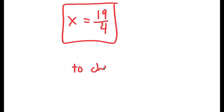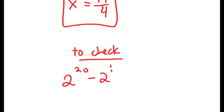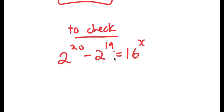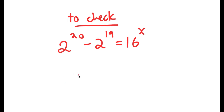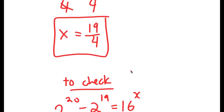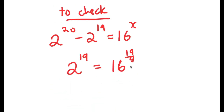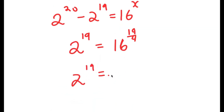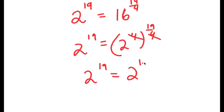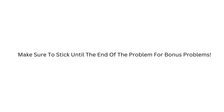To check, the original equation was 2 to the power of 20 minus 2 to the power of 19 is equal to 16 to the power of x. We already know that 2 to the power of 20 minus 2 to the power of 19 equals 2 to the power of 19. So we get 2 to the power of 19 is equal to 16 to the power of 19 over 4. Since 16 equals 2 to the power of 4, we have 2 to the power of 4 to the power of 19 over 4, and the two 4s cancel, giving 2 to the power of 19 equals 2 to the power of 19.